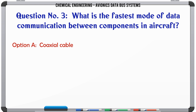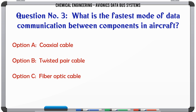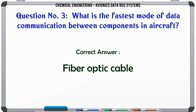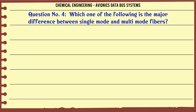What is the fastest mode of data communication between components in aircraft? A. Coaxial cable, B. Twisted pair cable, C. Fiber optic cable, D. Radio communication. The correct answer is Fiber optic cable.